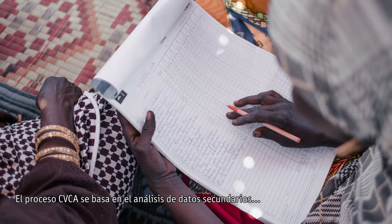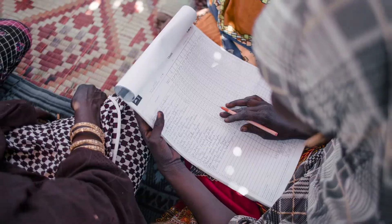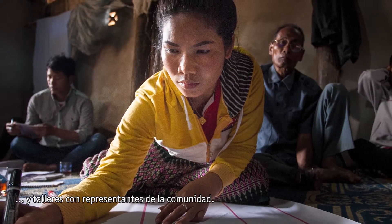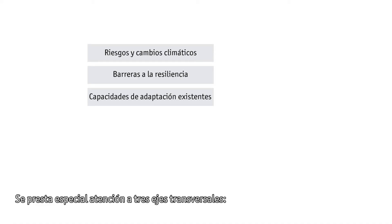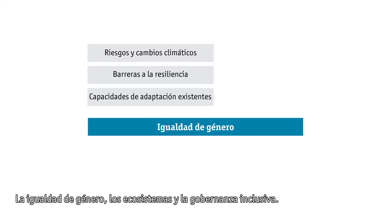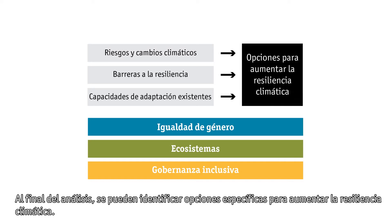The CVCA process relies on secondary research, interviews with key informants, and facilitated workshops and dialogues with community stakeholders. Particular attention is given to three major cross-cutting issues: gender equality, ecosystems, and inclusive governance. At the end of the analysis, specific options for increasing climate resilience can be identified.